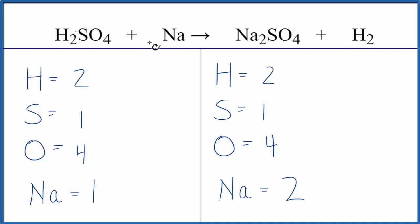So for Na, we'll change the number in front to a coefficient of two. It means we have one times two for Na, and that gives us two Na's.